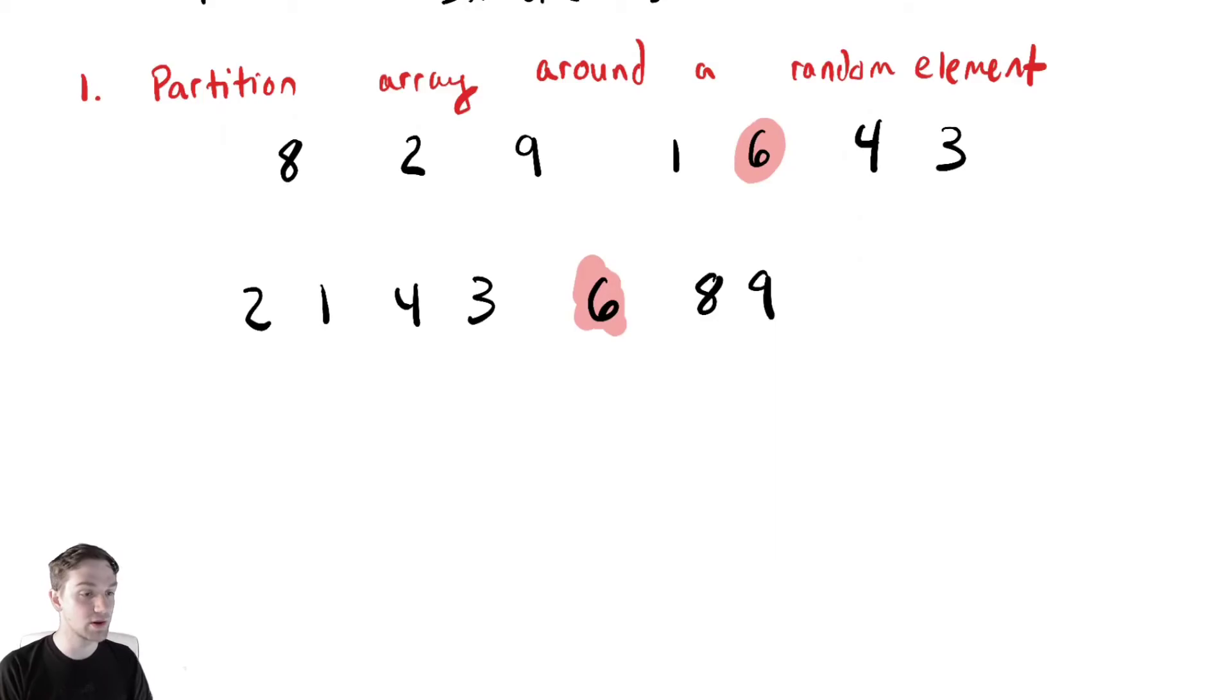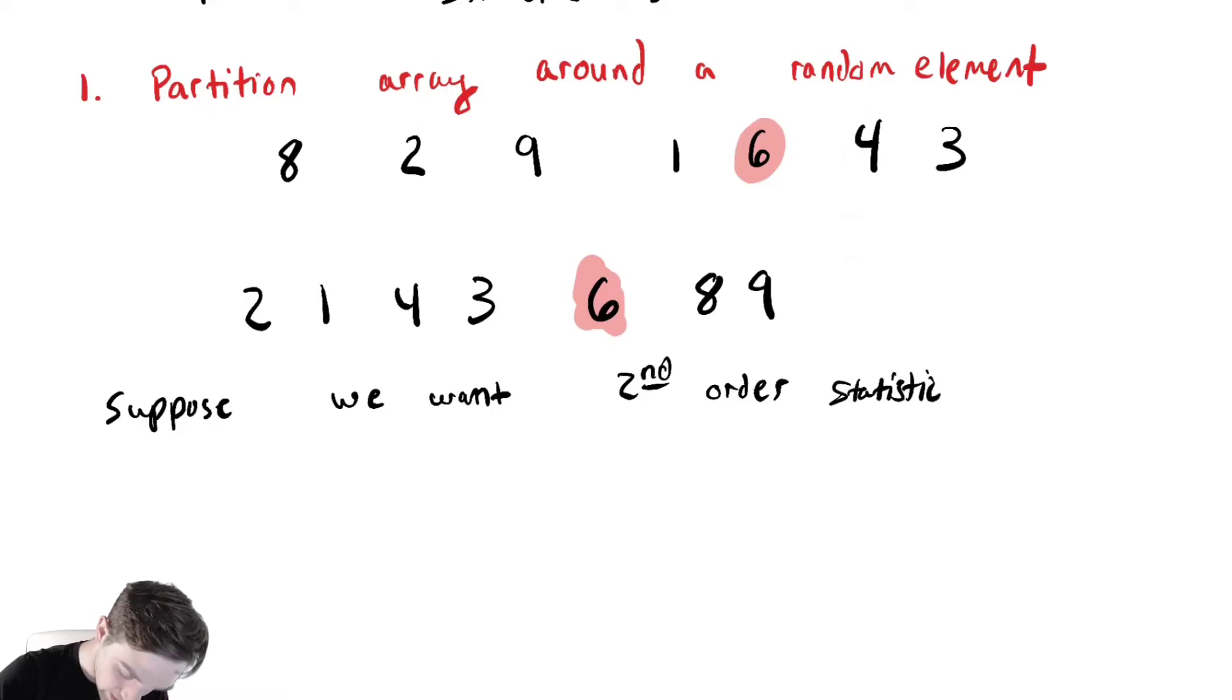Let's suppose we're looking for the second order statistic. The nice thing that we know now is that this element six is in the correct position. It is in position five in sorted order, which means that all of the things on the right-hand side, their correct position in sorted order or their order statistic have to be six or seven. And all of the things on the left must be one, two, three, or four.